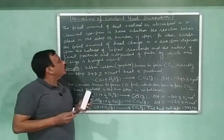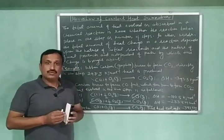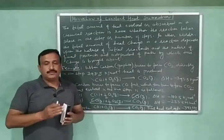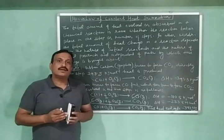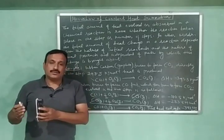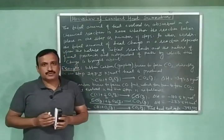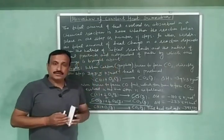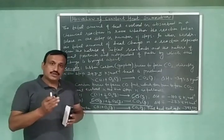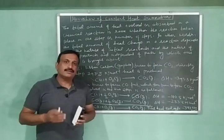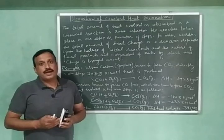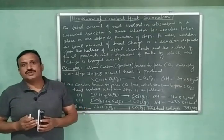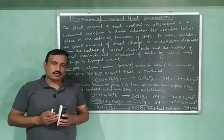So according to this law, the total amount of heat evolved or absorbed during a chemical reaction remains same, doesn't matter whether the reaction is carried out in one step or in number of steps. This means that the total amount of heat change in the reaction depends upon the nature of initial reactants and the nature of final products and is independent of the path or the manner by which that change has been brought about.